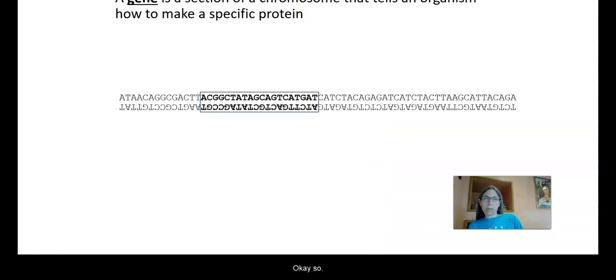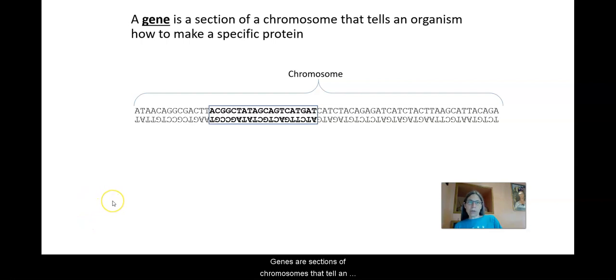Okay. So genes are sections of chromosomes that tell an organism how to make a specific protein. I like to think about genes like recipes in a cookbook. You have a cookbook that has all kinds of recipes in it that could be like a chromosome. And then an individual gene is an individual recipe within that cookbook that tells you how to make a specific kind of food, specific kind of cookie or soup or bread, whatever it is. That is the protein, what you make.